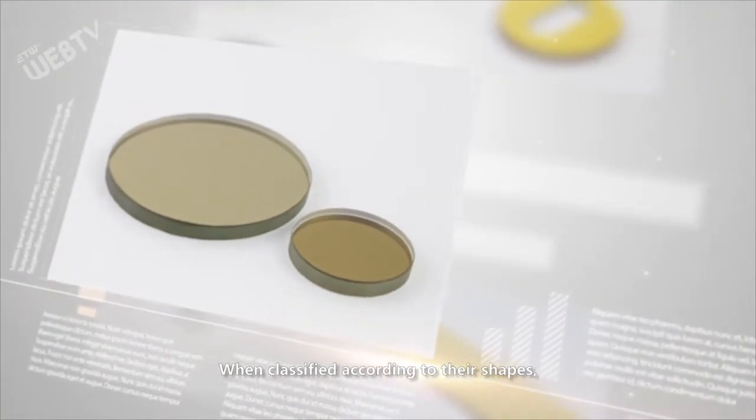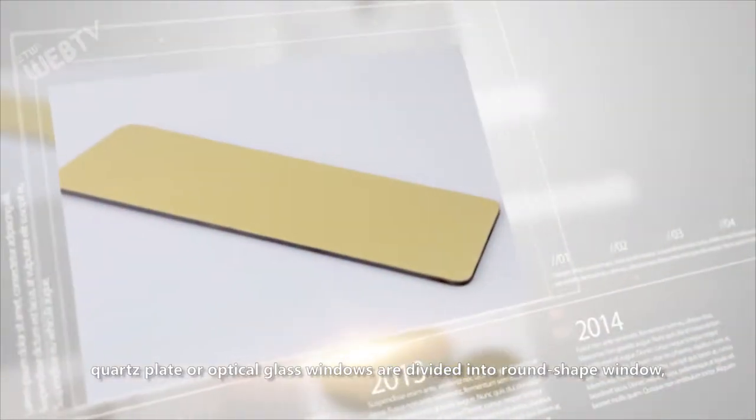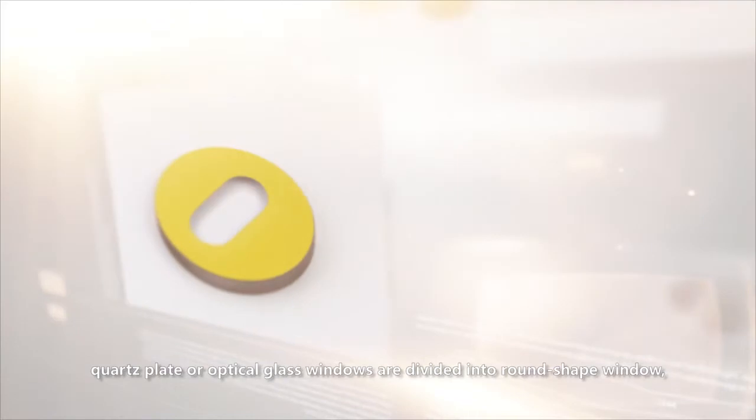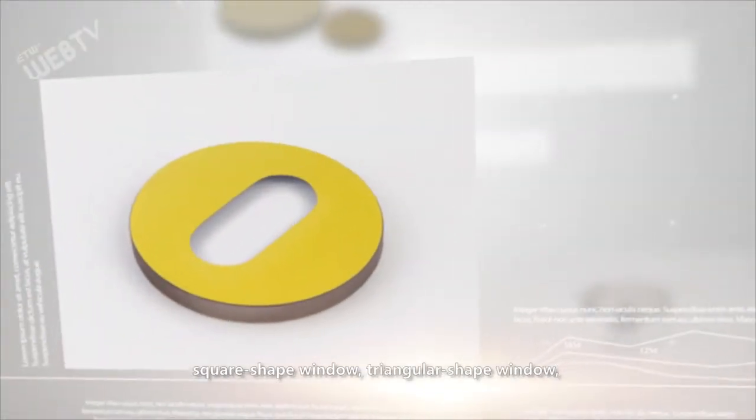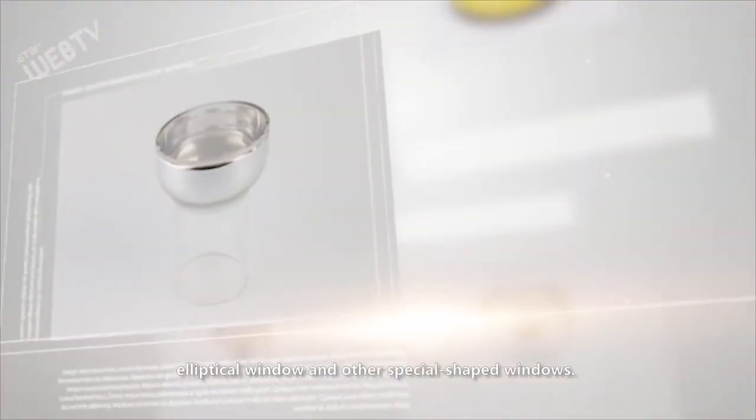When classified according to their shapes, quartz plate or optical glass windows are divided into round shape window, square shape window, triangular shape window, elliptical window, and other shape windows.